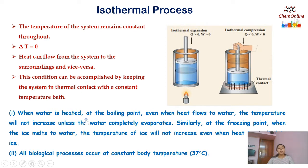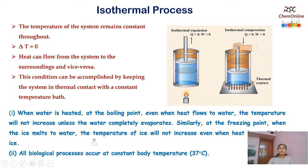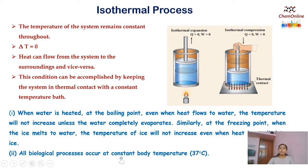For example, when water is heated at its boiling point, even when heat flows to water, the temperature will not increase until the water completely evaporates. Similarly, at the freezing point, when ice melts to water, the temperature of ice will not increase even when heat is supplied to ice. Another example we can see in everyday life is that all biological processes occur at a constant body temperature of 37 degrees Celsius. So this is another example of an isothermal process.